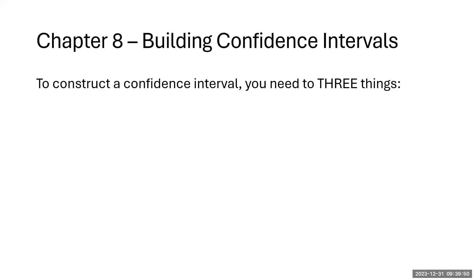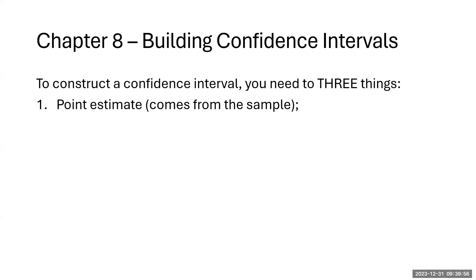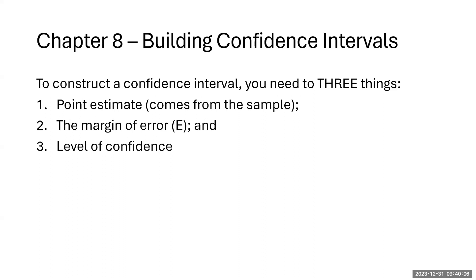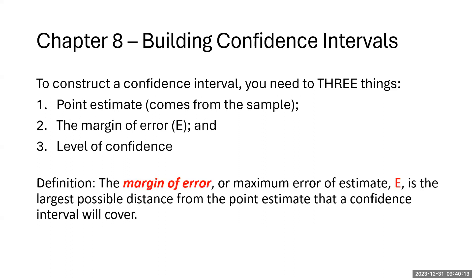To build confidence intervals, we need three things: first, a point estimate from the sample — either a sample proportion or a sample mean. Second, we need the margin of error, which we have to compute. Third, we need a level of confidence. The margin of error, or maximum error of estimate E, is the largest possible distance from the point estimate that a confidence interval will cover — it essentially defines how wide the interval is going to be.